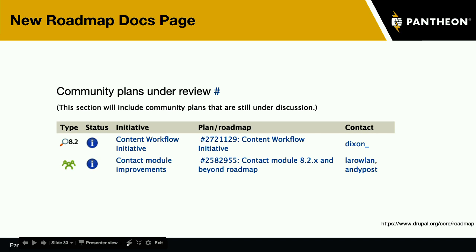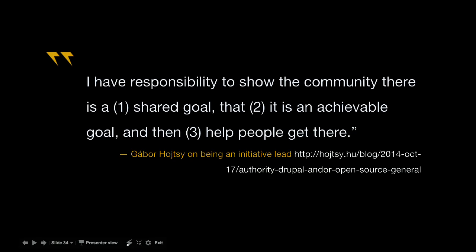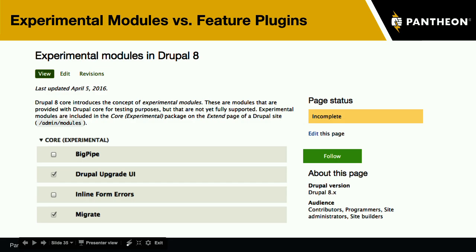We already have community plans under review. Yesterday in the keynote, Dries outlined the idea of separate stages for initiatives: a planning phase, stages where they are being proposed under some formal review, and then an active state where they're actively being worked on. We can separate what happens in each stage so we don't fall into the same bike-shed discussions in a less well-defined process. I recommend everyone check out Gabor's blog post on being an initiative lead — it spelled out in wonderful detail how you can get big changes done in Drupal core. Being an initiative lead is the responsibility of setting a shared goal, showing the community that the goal is achievable, and helping people get there.